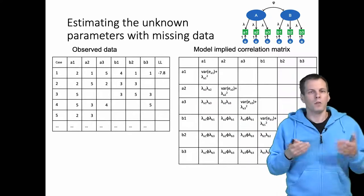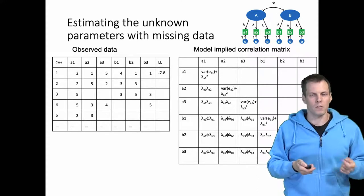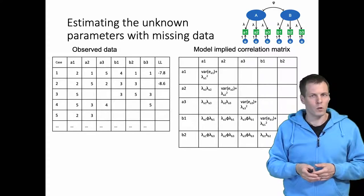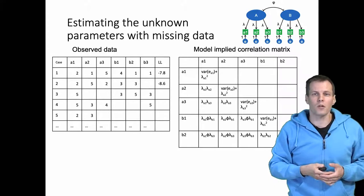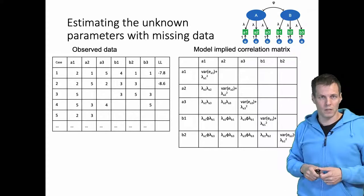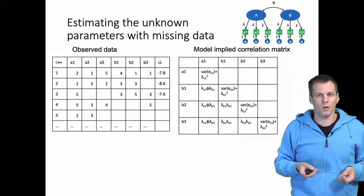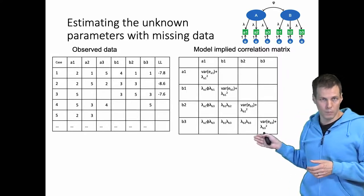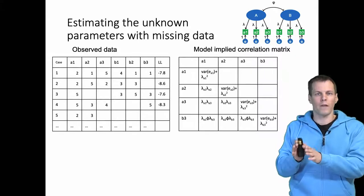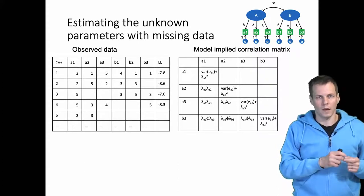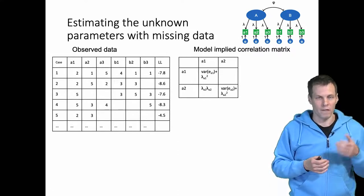That gives us the likelihood for the first observation. The second observation has missing data, so we use the same implied covariance matrix but leave the missing variable out — we look at how likely we are to get five values from a five-dimensional multivariate normal distribution characterized by that covariance matrix. Moving to the next observation with four observed and two missing values, we calculate the likelihood from the corresponding subset of the model-implied covariance matrix. We proceed this way, calculating the likelihood for each observation using the part of the covariance matrix for which we have observed data.